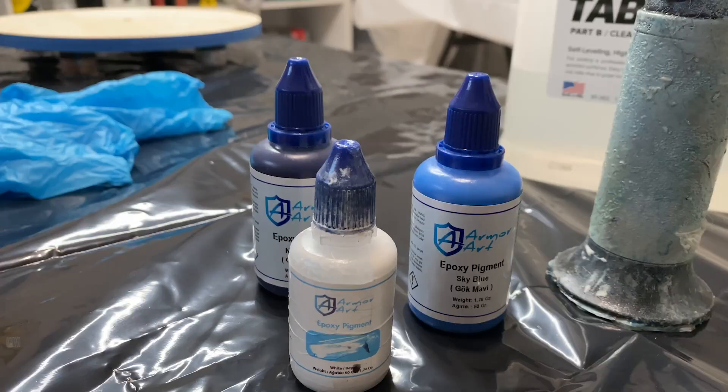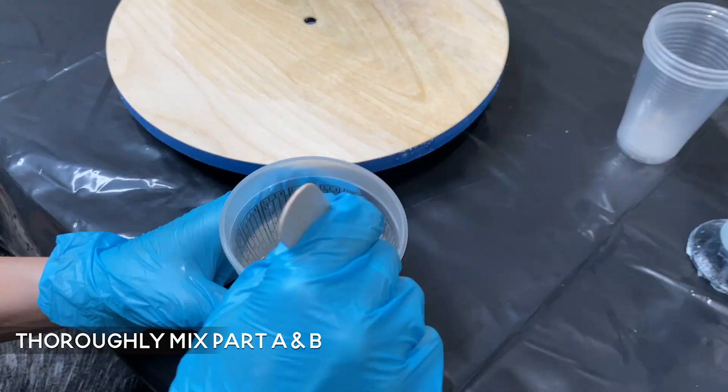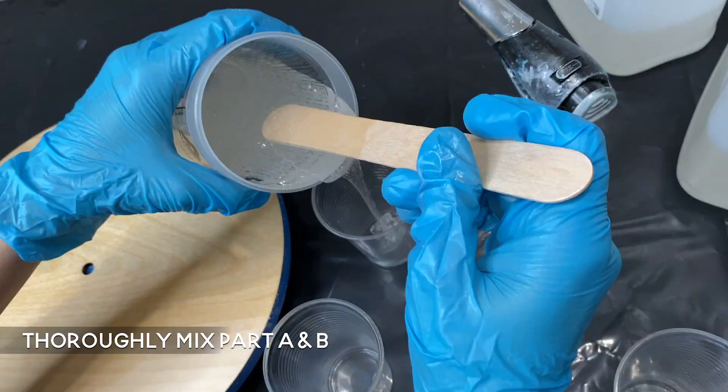Moss is a two-part epoxy. This means you need to measure part A and part B equally. That means if you have two ounces of part A, you should have two ounces of part B. It's really important to get your measurements as close to perfect as possible.